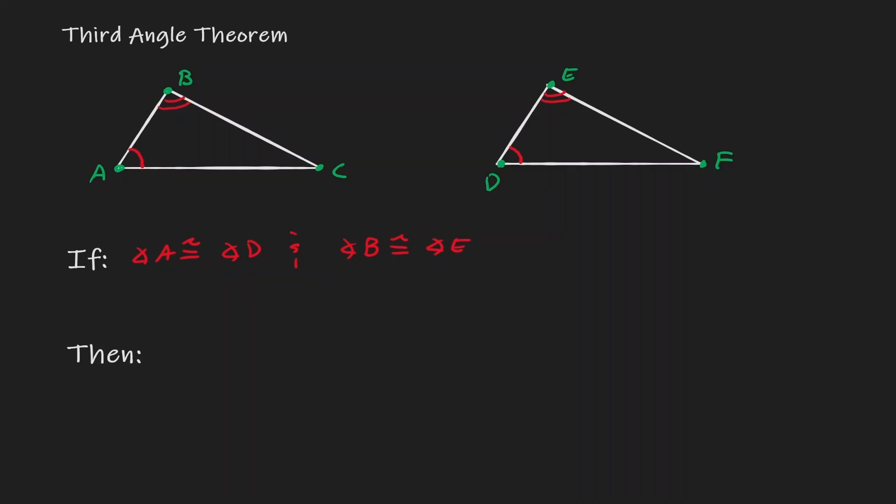Then what can we say about angle C and angle F? Well, I know that the total sum of the interior angles within a triangle is 180 degrees. And since angles A and B are congruent to their counterparts, angle C should be congruent to angle F.